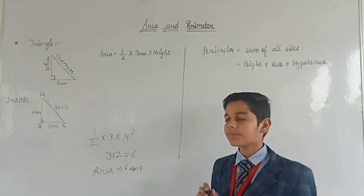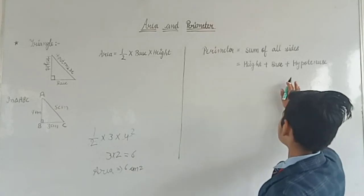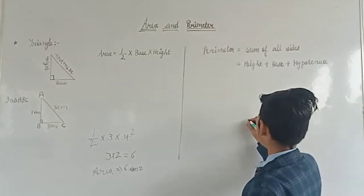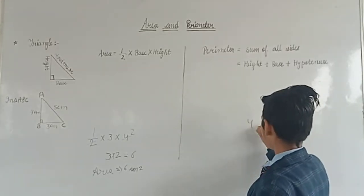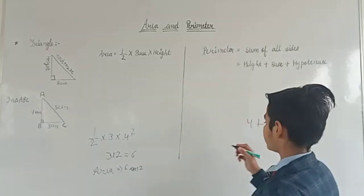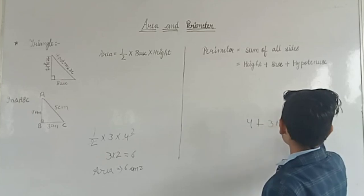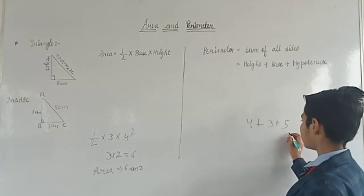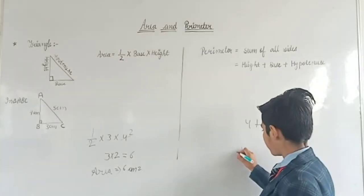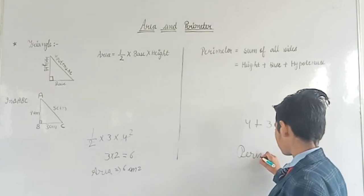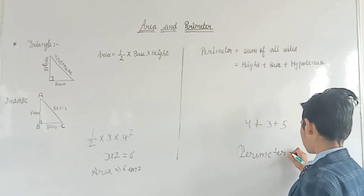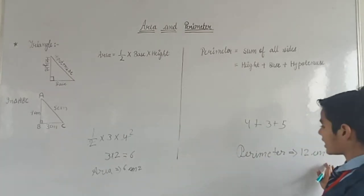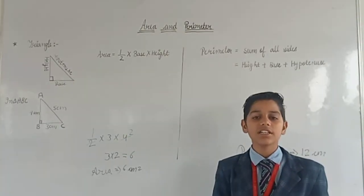Now we will find the perimeter. The formula is height + base + hypotenuse. Height is 4 cm, base is 3 cm, and hypotenuse is 5 cm. So 4 + 3 = 7, and 7 + 5 = 12. The perimeter is equal to 12 cm, and the area is equal to 6 cm².